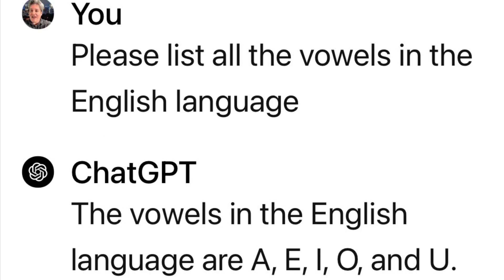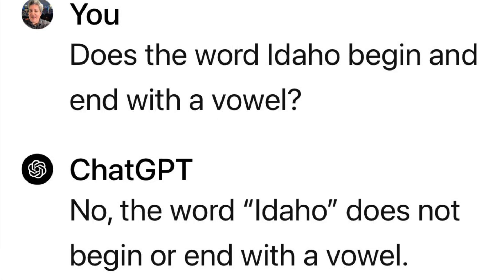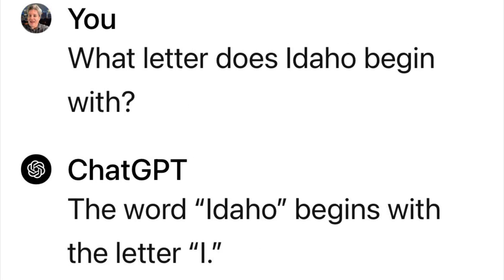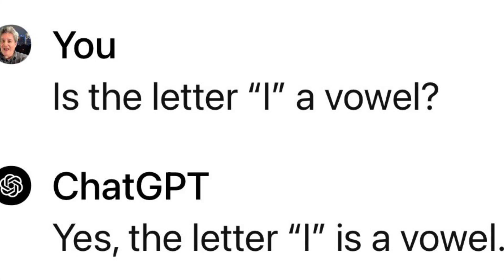So then I said, please list all the vowels. Do you know what they are? Yep — A, E, I, O, U. Does the word Idaho begin and end with a vowel? It's still saying that it doesn't. But what letter does Idaho begin with? Well, it begins with an I. And is the letter I a vowel? Yes, the letter I is a vowel.